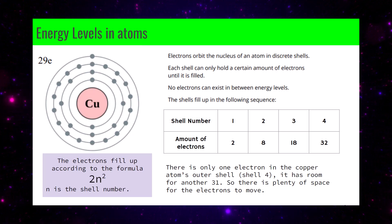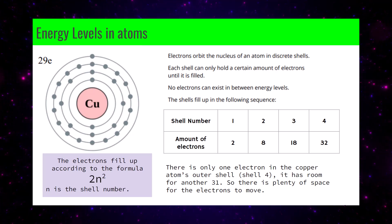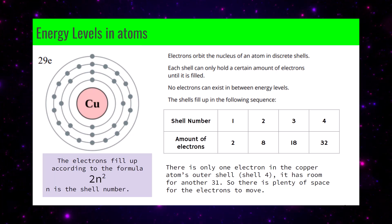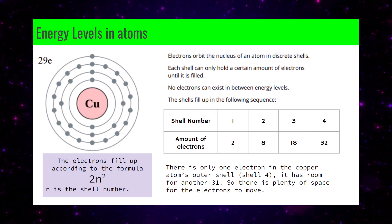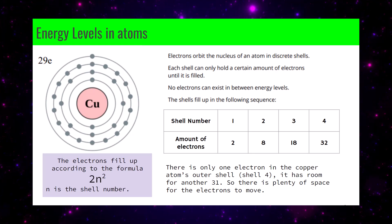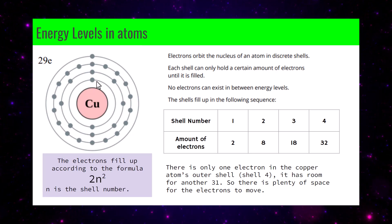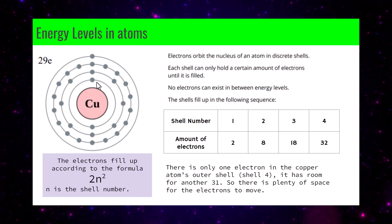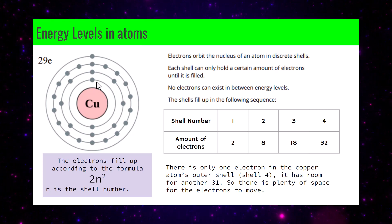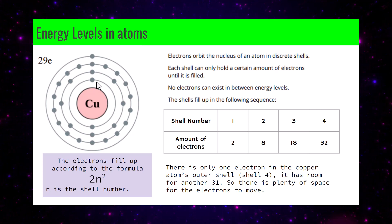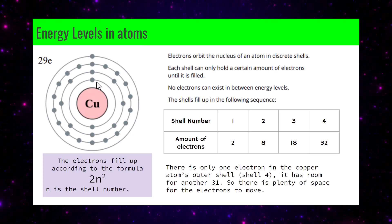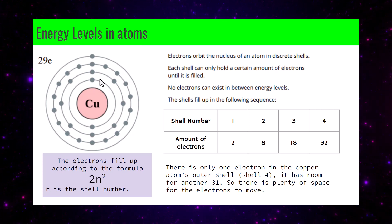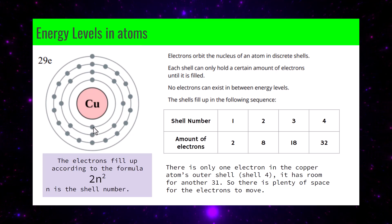Electrons live in shells, and there's a rule for how many electrons can fit in each shell: 2n², where n is the shell number. For the first shell, n=1, so 2×1²=2 spaces — filled right away by two electrons. No more electrons can go in that shell.